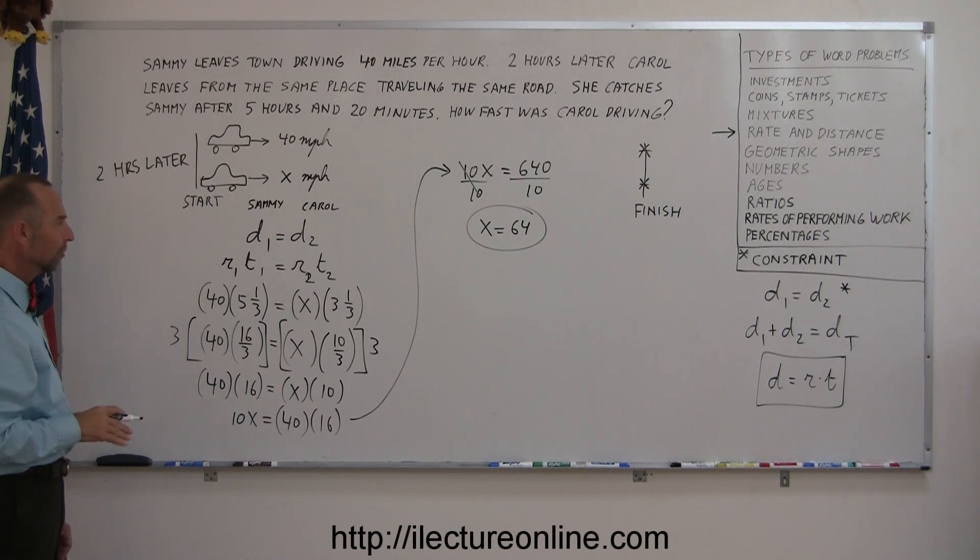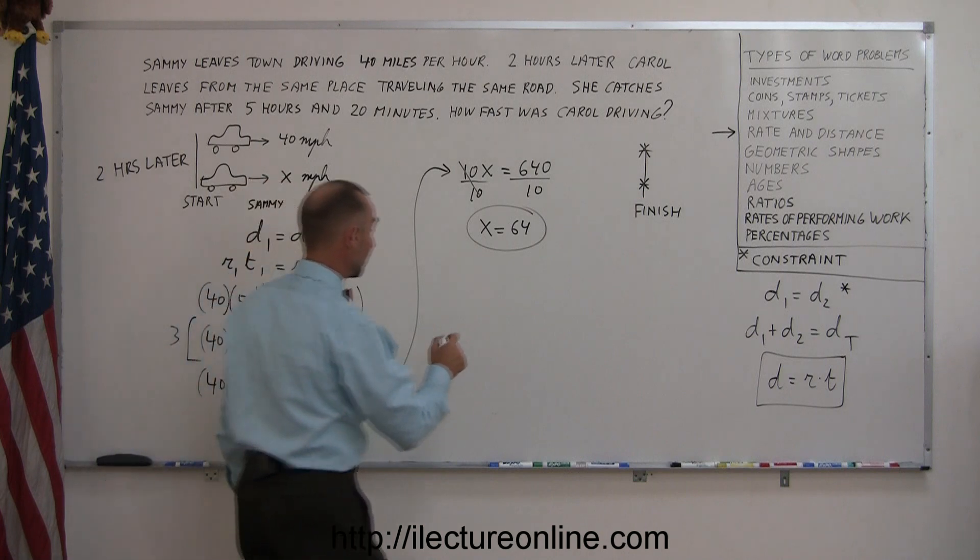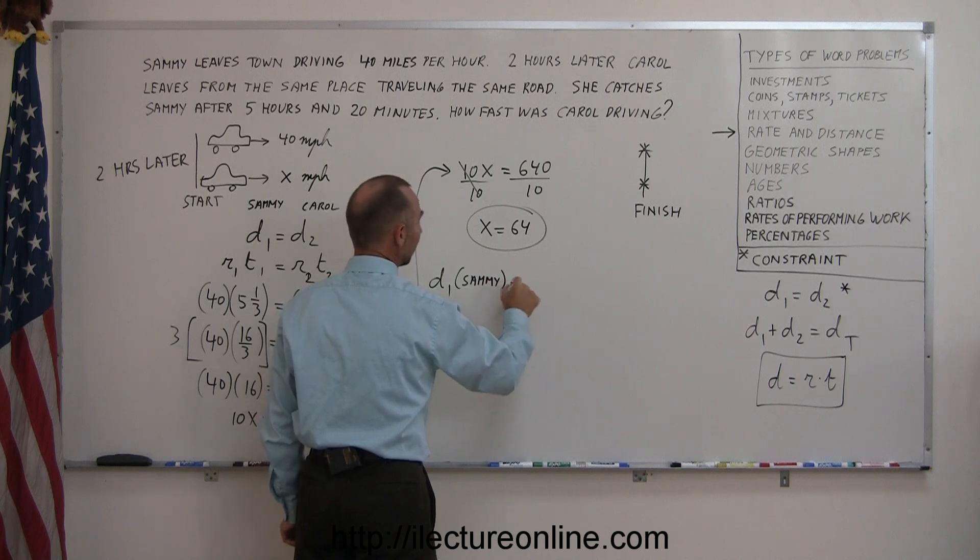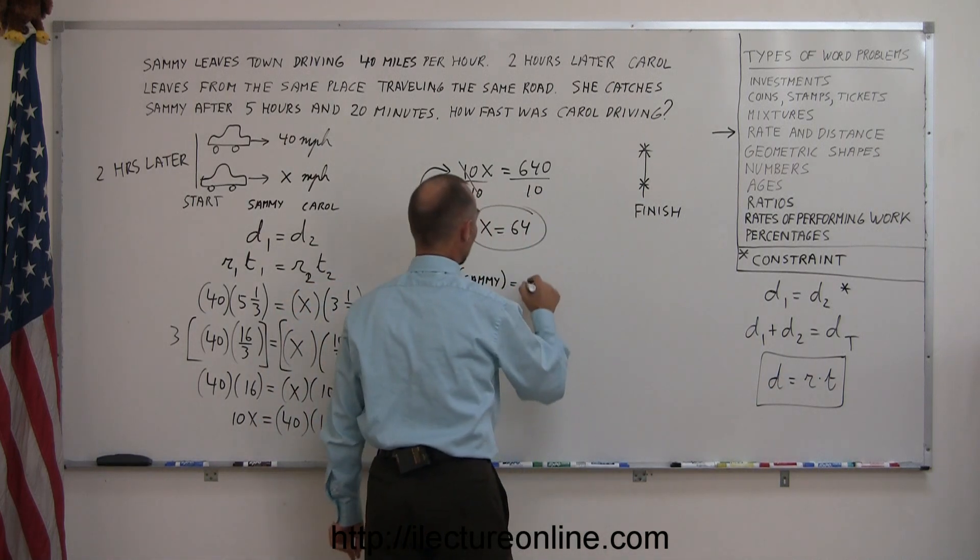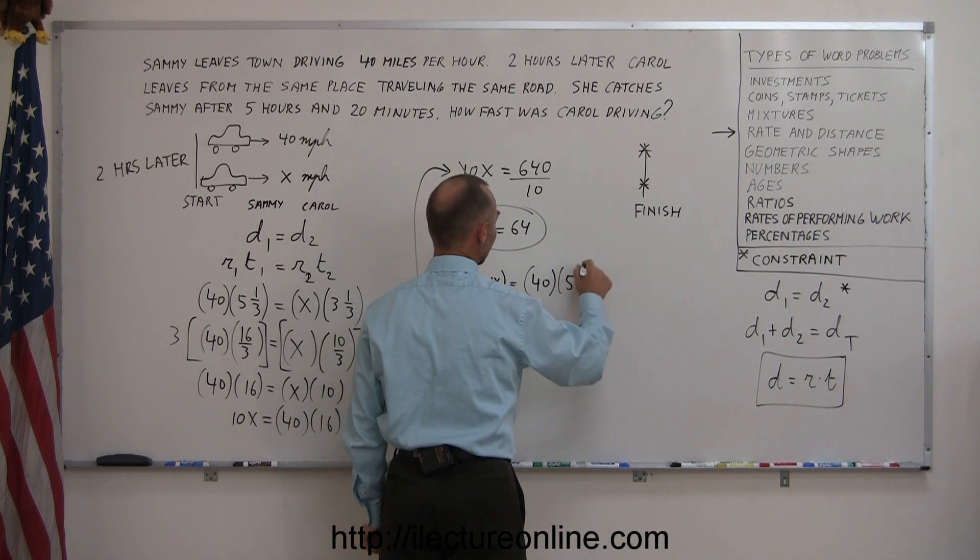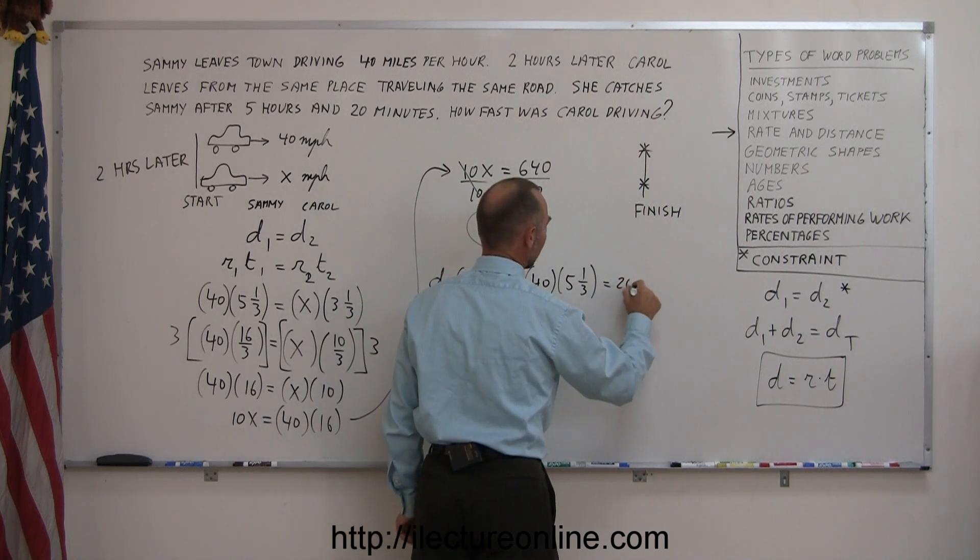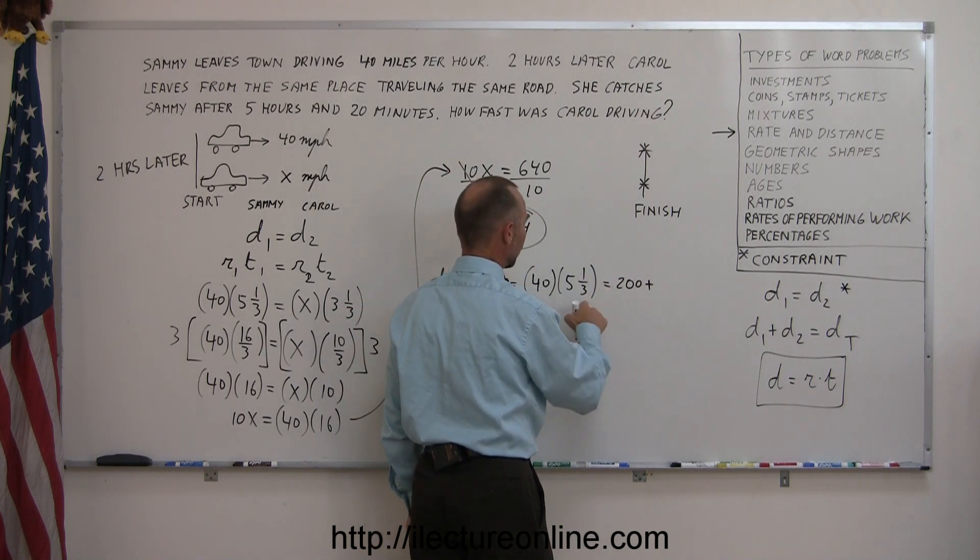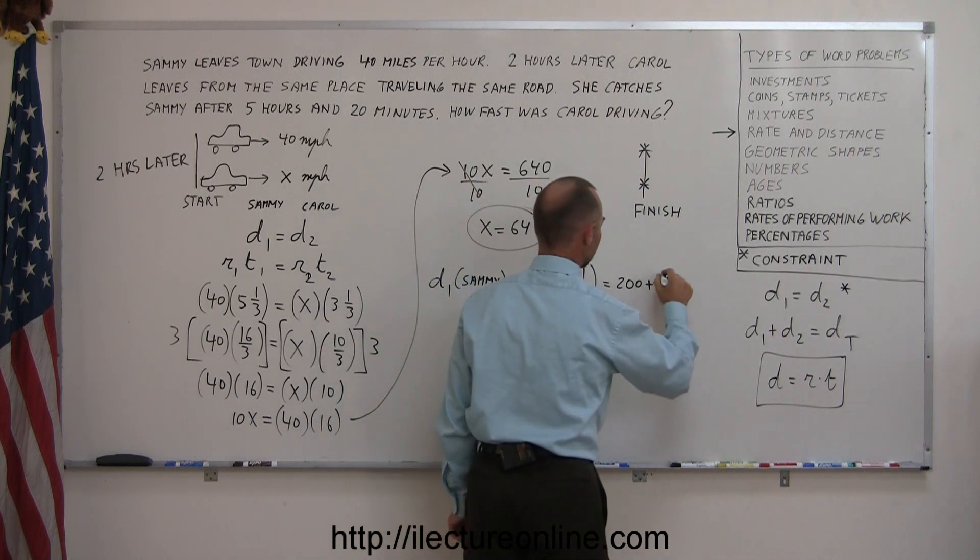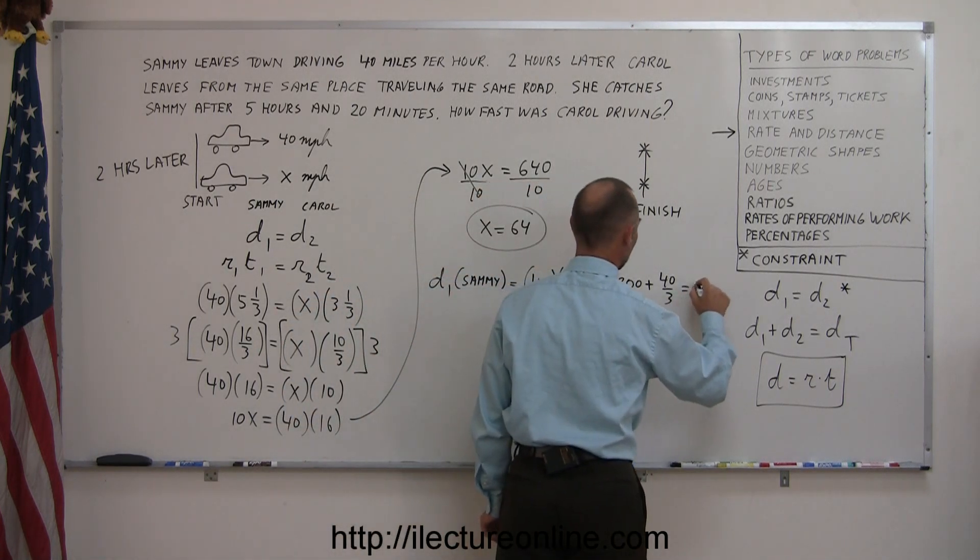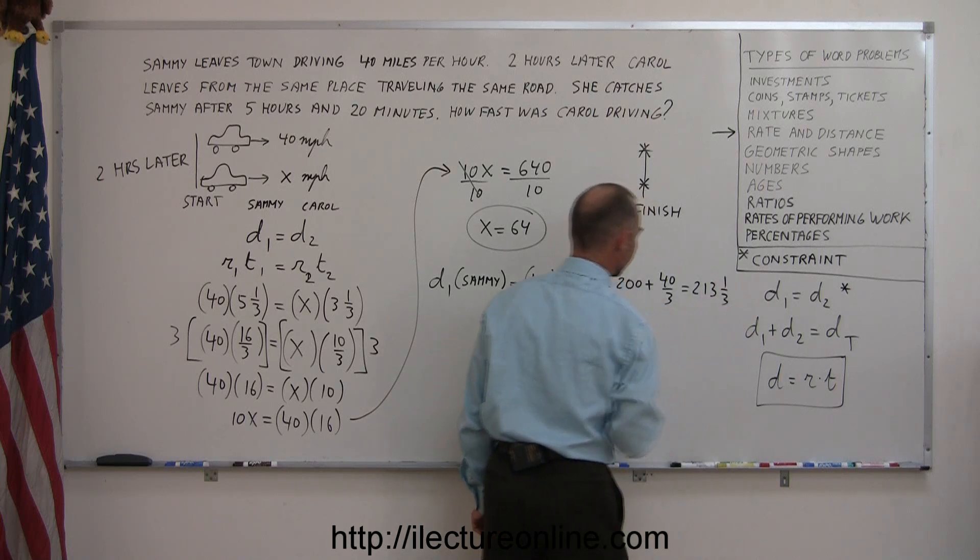Now, to make sure we did this correctly, is there some way we can check? Well, if Sammy travels 40 miles per hour for 5 hours and a third, then I can calculate how far Sammy travels. So distance 1 for Sammy is equal to the distance equals rate times time. So the rate is 40 times the time, which is 5 and a third. So 40 times 5, that's 200. Plus 40 times a third, that's 40 divided by 3. And 3 goes into 40, 13 and a third times. So that would be 213 miles and a third.